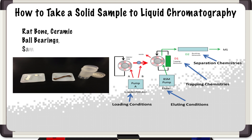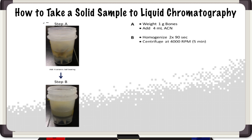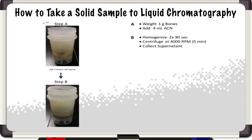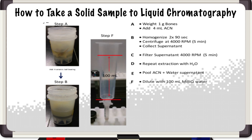So taking the rat bone, we actually put it into a container with ball bearings. Using a solvent, we use a microcentrifuging technique, and we pulverize the bone until it gets into a fine powder. Then we take the supernatant, we repeat an extraction process using water, we pull the acetonitrile and water supernatant, then we dilute it with more water, and we load it onto an Oasis MCX 150 milligram cartridge.